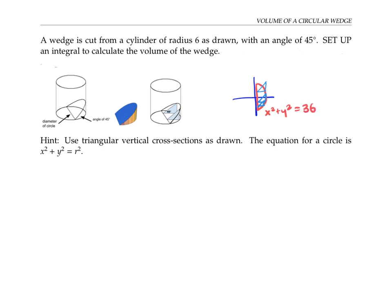The cross-sections are triangles that are right triangles, because they're formed from the horizontal base of the cylinder and the vertical sides of the cylinder. Since one angle of the right triangle is 45 degrees and one angle is 90 degrees, the remaining angle must be 45 degrees, so these are isosceles right triangles.